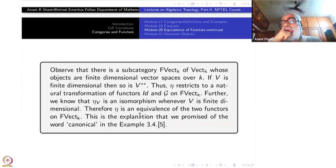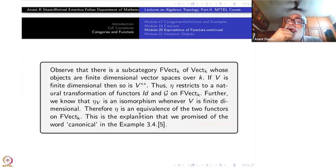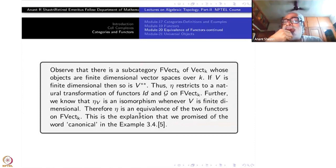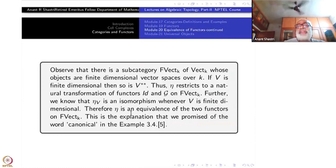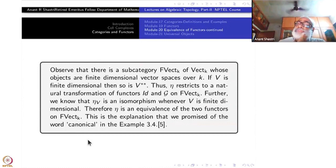We know that eta_V is an isomorphism whenever V is finite dimensional. Therefore eta is an equivalence of the two functors: the identity functor and the double dual functor. It is not just one vector space where you got an isomorphism, but for all vector spaces together in such a compatible way — that is the meaning of the canonical isomorphism. So this was just a verbose explanation of the technically precise statement: there is a natural transformation which is an equivalence. Category theory has achieved that.